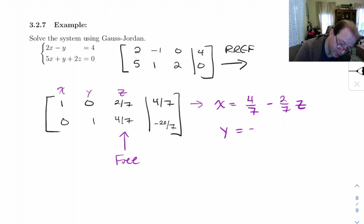y is negative 20 over 7 minus 4/7 z. And z is a free variable, so it's just equal to itself.